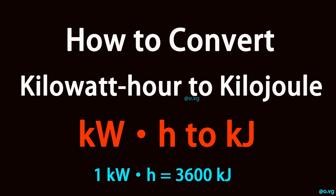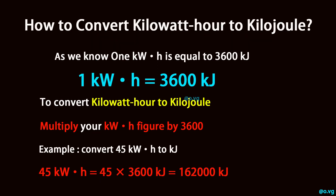How to convert kilowatt-hour to kilojoule. As we know, 1 kilowatt-hour is equal to 3600 kilojoules.